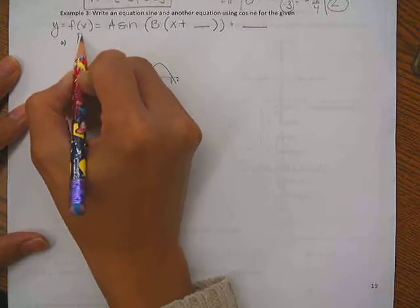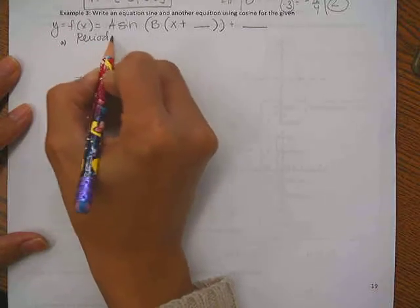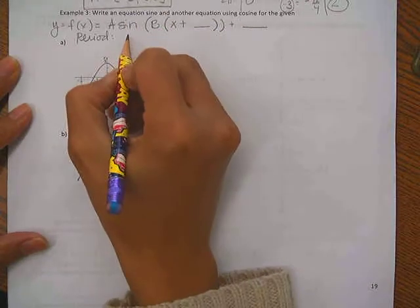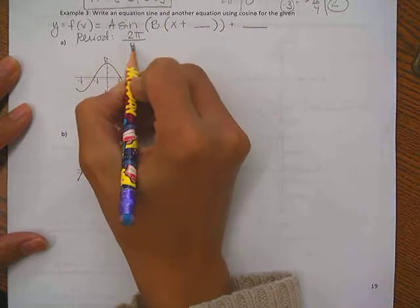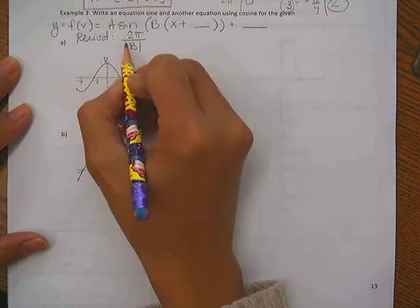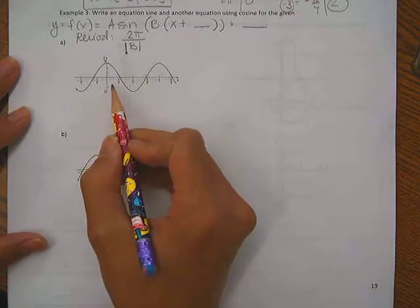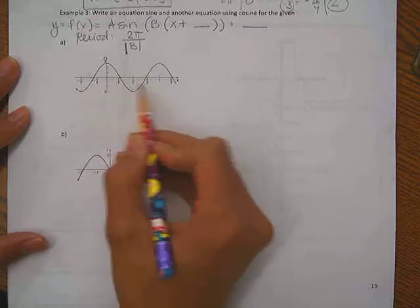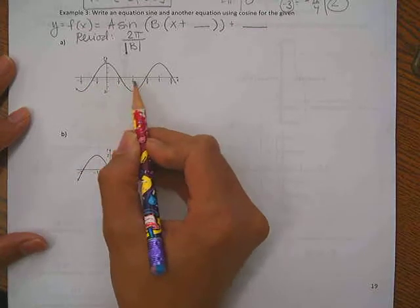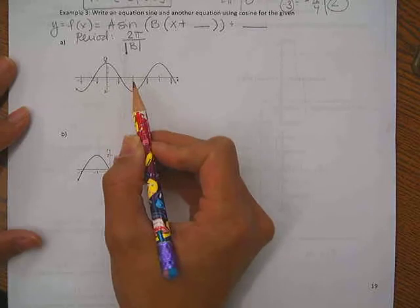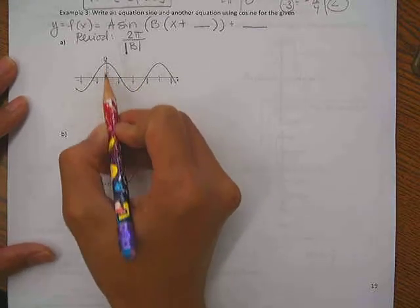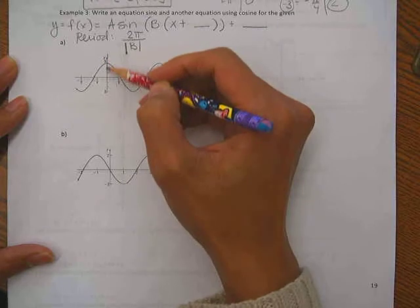Well, remember how we use period. Period of a sine or cosine function is 2π divided by absolute value of b. So the first thing I would like for us to do is find how long, the horizontal distance, that this graph travels before it repeats. So the easiest point for me to start is going to be when x is 0, I'm going to start right here.